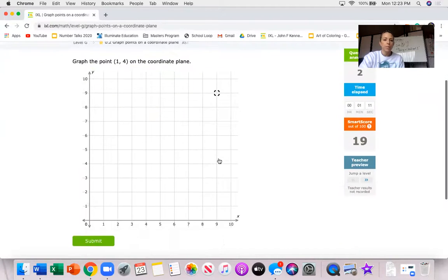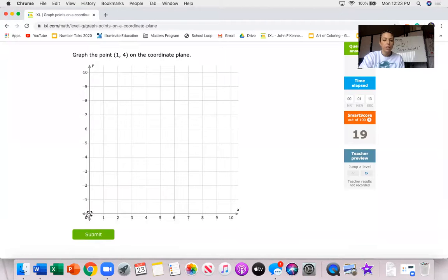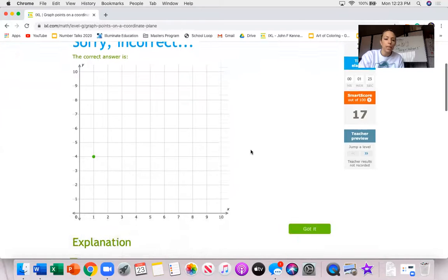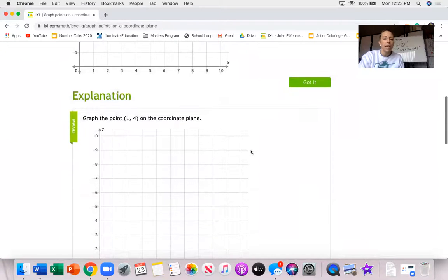Now let's see what happens if I do this wrong. For example if I started zero and I first go to one on the Y and four on the X and I click submit uh-oh incorrect. Most of you are not doing this and you need to look at the correct answer and look at the explanation.